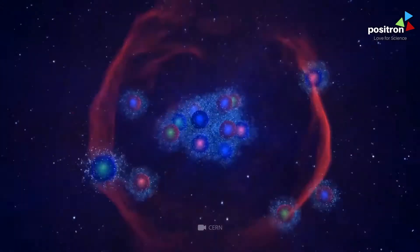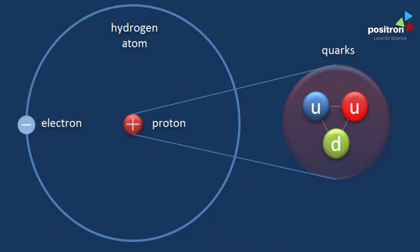researchers firing electrons at atoms were finding hints that even the protons and neutrons making up atomic nuclei contain some kind of structure, now known to be quarks, trapped inside them.